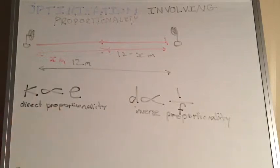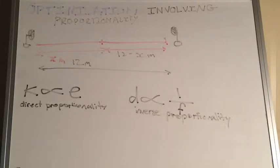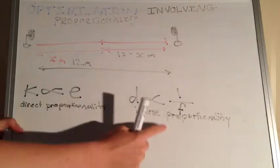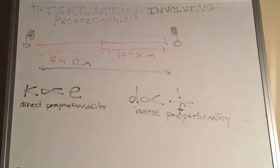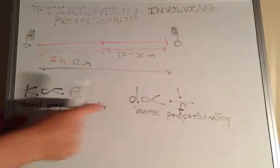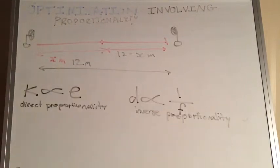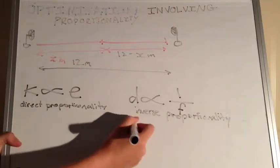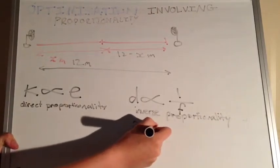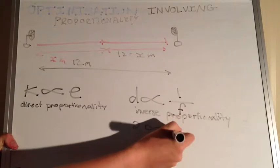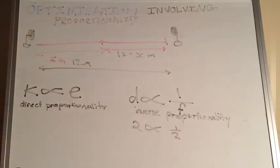So there's direct proportionality — that's where if we have five parts of something then we're going to have five parts of something else. They're directly proportional, so equal in the increase of magnitude. Whereas with inverse proportionality, whenever something increases — say the variable d — then f is going to decrease. So if we had two parts d, then it would be half of what f is.